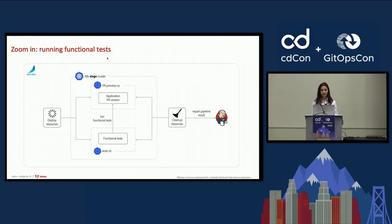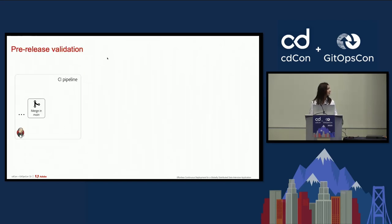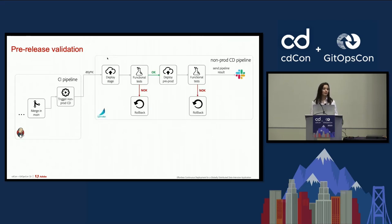Once functional tests are complete, the results are reported back to the CI pipeline. With this type of functional validation, we make sure that the application can be successfully deployed and behaves as expected. After functionally validating the PR, we are confident in merging it into the main branch once it receives at least two approvals, and automatically promoting it to non-production environments.